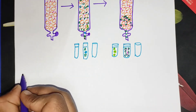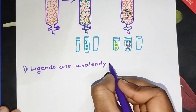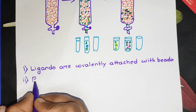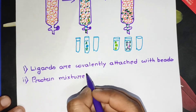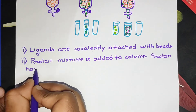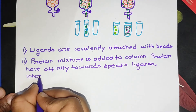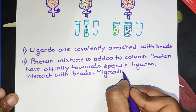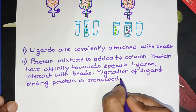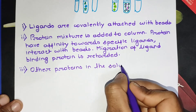In summary, in affinity chromatography: first, ligands are covalently attached with the beads. Second, a protein mixture solution is added to the column. Third, proteins that have affinity towards the specific ligand interact with those beads, and migration of the ligand-binding protein is retarded by this specific interaction.